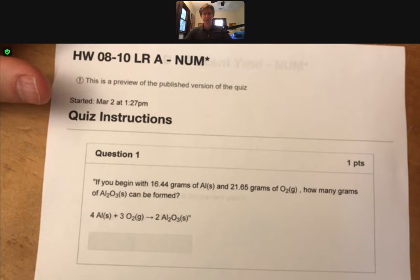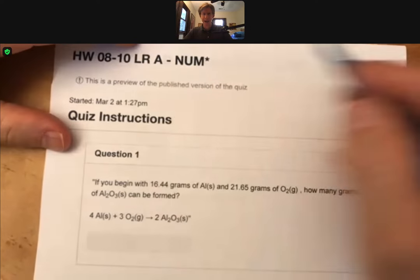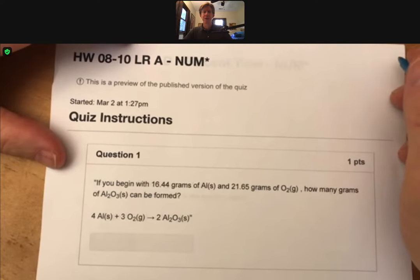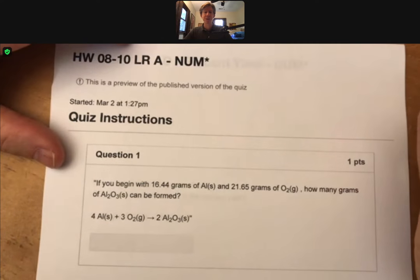Now it's time to do a limiting reactant problem. This is A on the homework, but there are a number of limiting reactant problems, and you will have to put in a number, and the asterisk means that you will have to show your work.